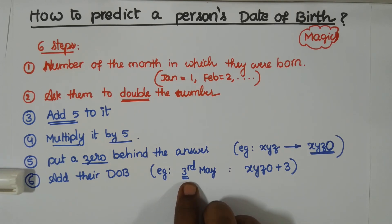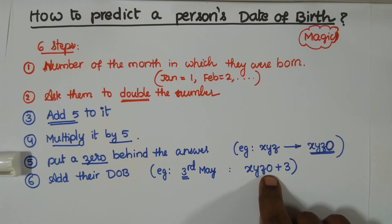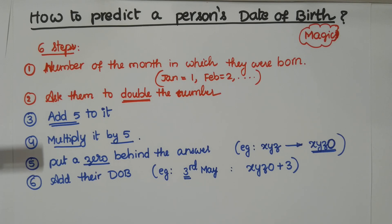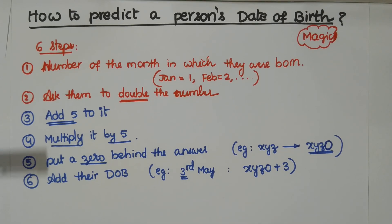For example, somebody was born on say third May. Third May. Now, x, y, z, zero, whatever we obtain in step number five, plus date of birth. Not month or year, just date. Add three. If somebody was born on say fifth January, now just add five to x, y, z, zero. Very simple, right? After all these steps are over, ask them to tell you the final answer. Now, by listening to their final answer, you can predict their date of birth in no time. Maximum, you will take one second.